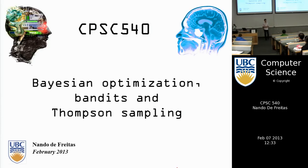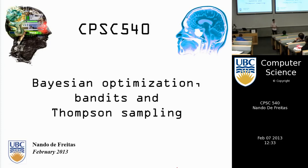Today's class will use Gaussian processes as a tool for a technique called Bayesian optimization, which is a form of optimization when you don't have an explicit expression for the objective function.